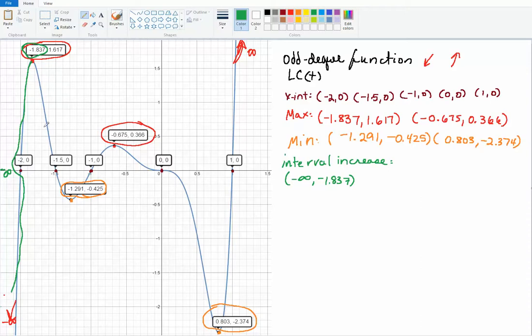Then the function started decreasing. Well, we don't care about the intervals of decrease right now. Then when it hit this value right here, the function started increasing. See this? It's increasing up until which x value? This one right here.